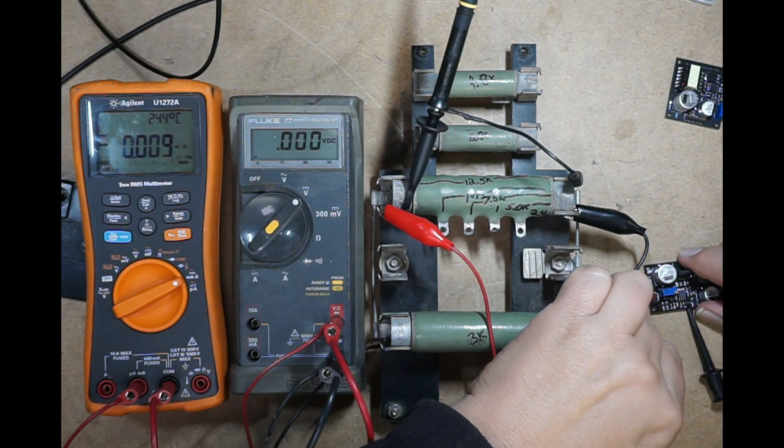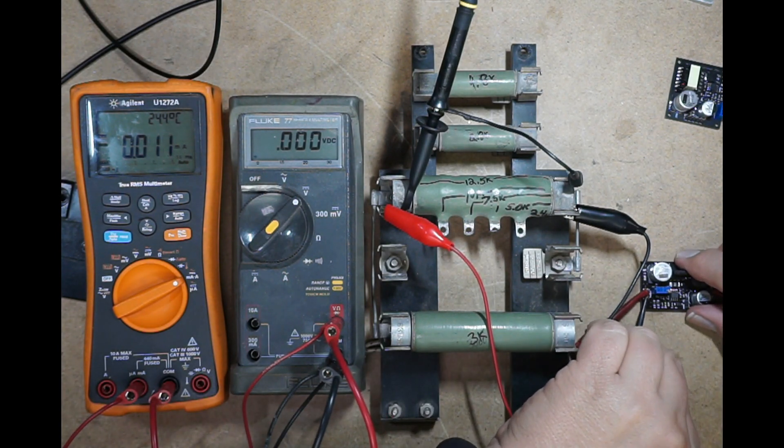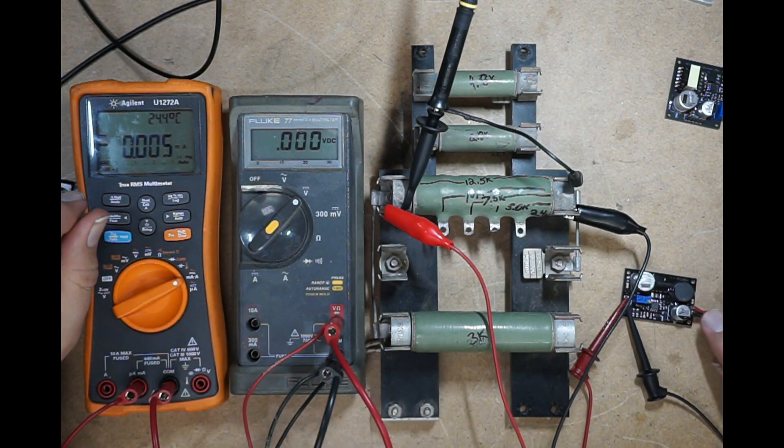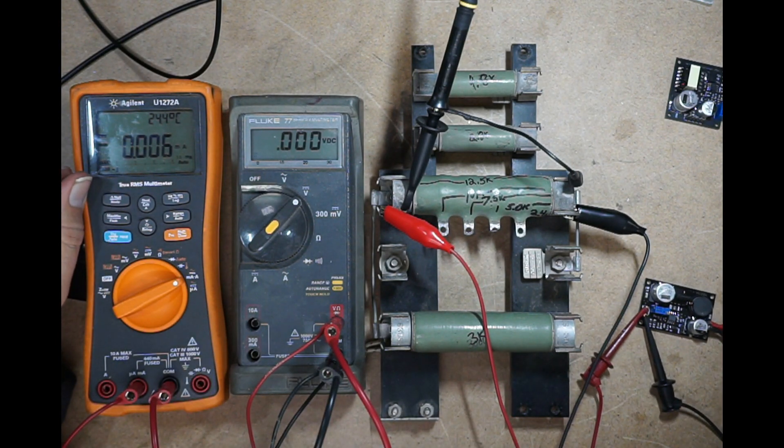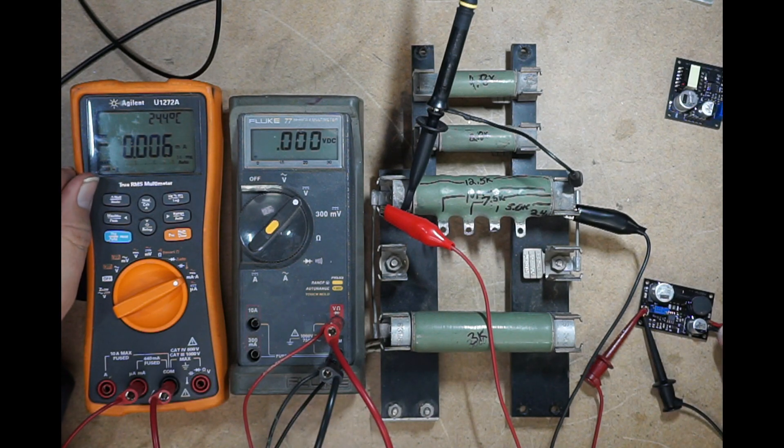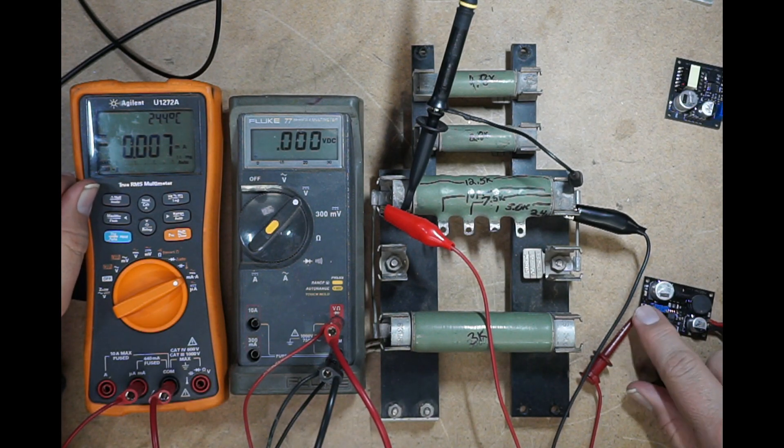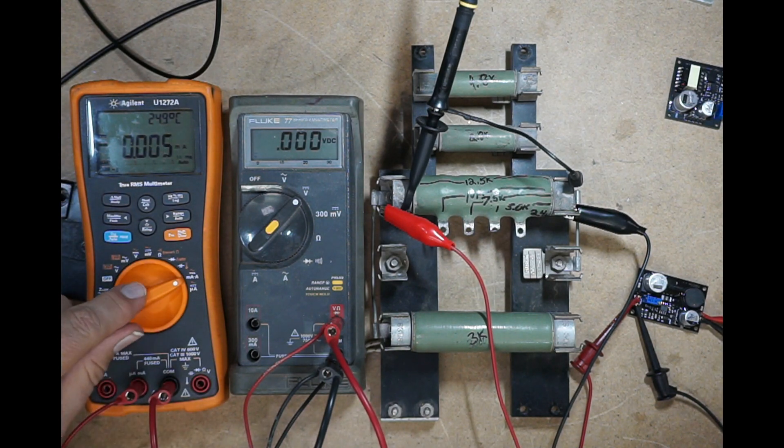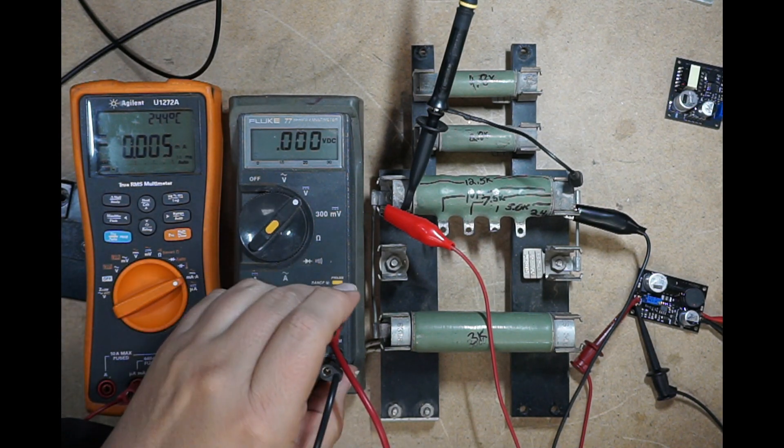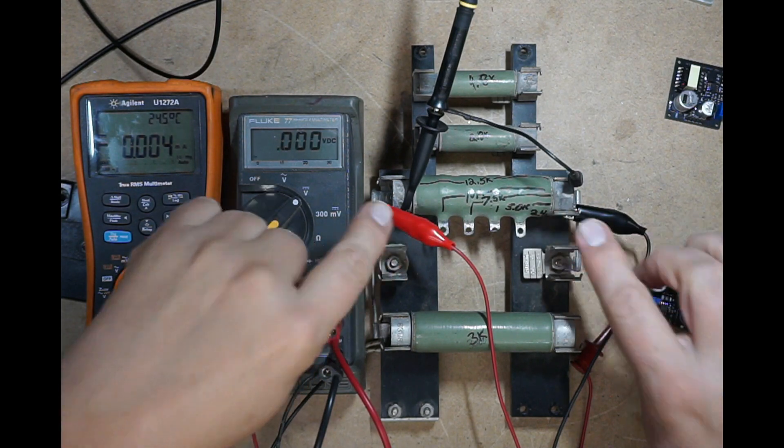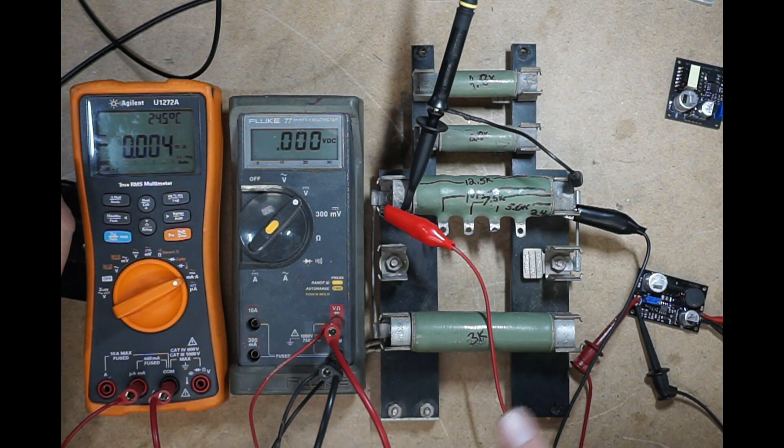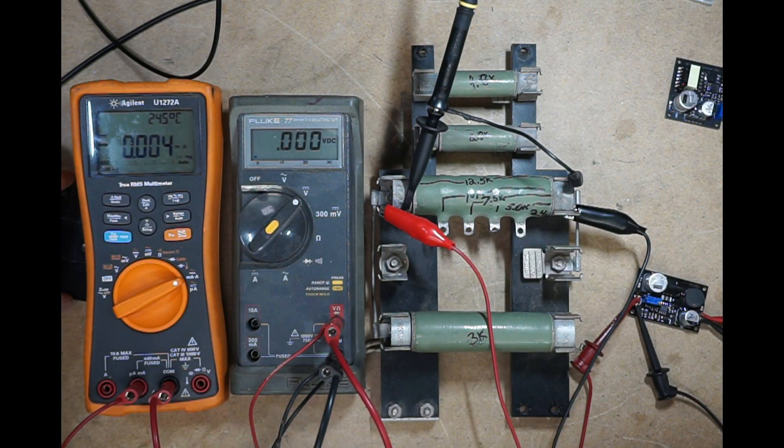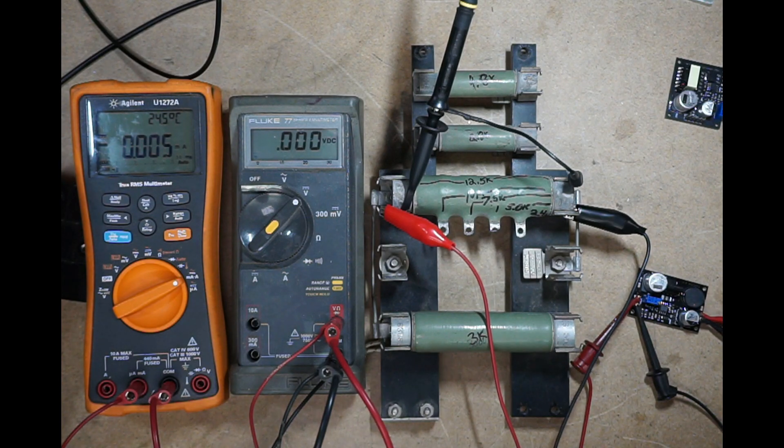And the way this is wired is, the input voltage is over here. My output voltage is over here. Output voltage runs through this ammeter, then it runs over to this voltmeter, and then it runs out to the load. So right now we have a 12.5k load on this. So I'm going to turn on the DC power supply, which is set at 18 volts.